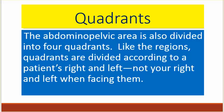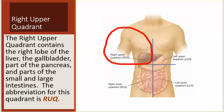Quadrants. The abdominal pelvic area is also divided into four quadrants. Like the regions, quadrants are divided according to a patient's right and left, not your right and left when facing them. The right upper quadrant contains the right lobe of the liver, the gallbladder, part of the pancreas, and parts of the small and large intestines. The abbreviation for this quadrant is RUQ.